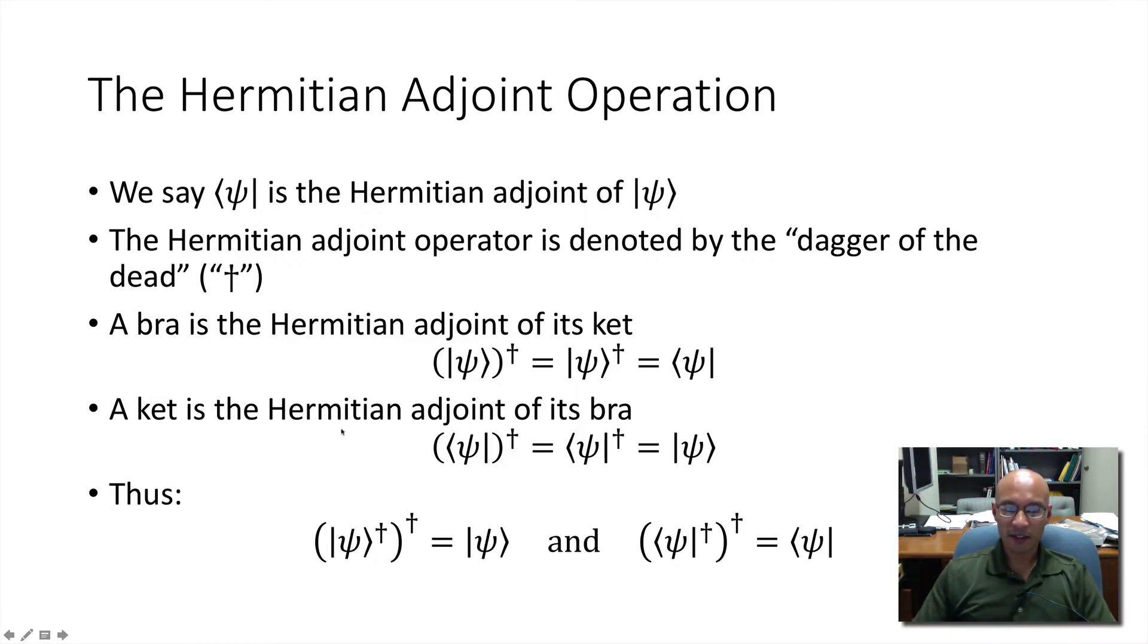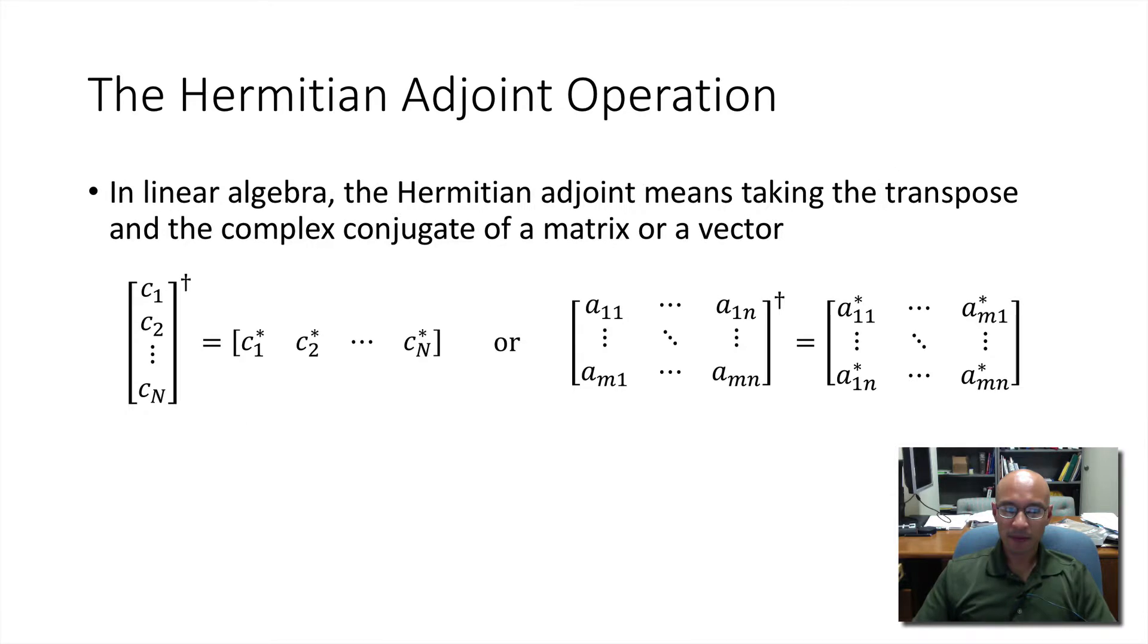Likewise, a ket is the Hermitian adjoint of a bra. And if we apply the Hermitian adjoint operator twice to a ket, we get a ket. Similarly, we take the Hermitian adjoint of a bra twice, we get the bra. Now, in linear algebra, the Hermitian adjoint means taking the transpose and the conjugate of a matrix or a vector.